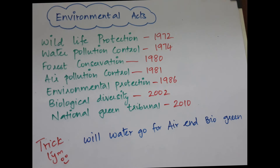The environmental acts are: Wildlife Protection Act, Water Pollution Control Act, Forest Conservation Act, Air Pollution Control Act, Environmental Protection Act, Biological Diversity Act, and the National Green Tribunal Act. The years are on the board, and memorizing them is actually very easy — there's a trick for this too.